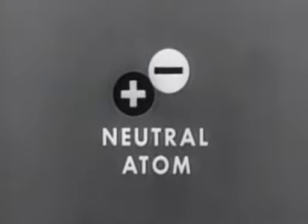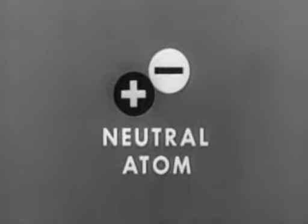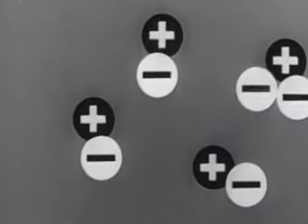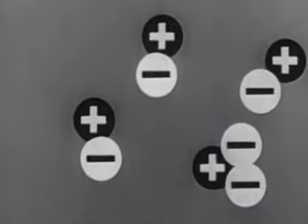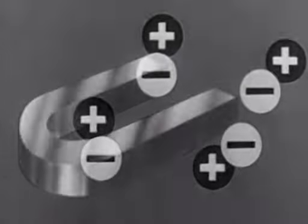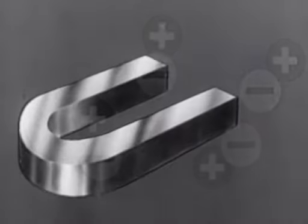This represents a neutral atom in electrical balance. Earlier we saw how an outside force can break an electron away from an atom and start an electron chain reaction — an electric current flow. One way to provide that outside force is by use of a magnet.